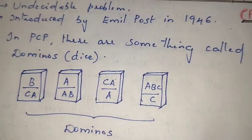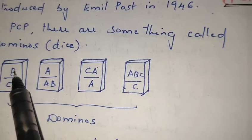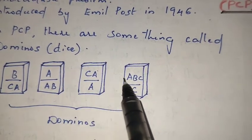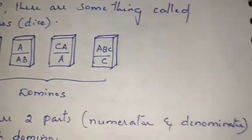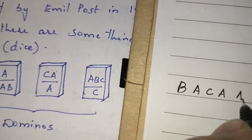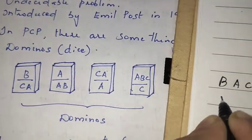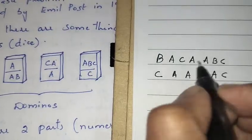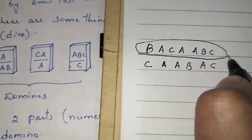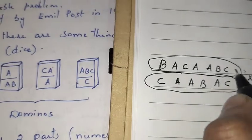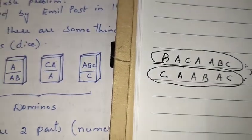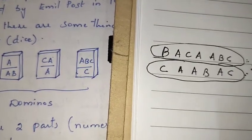We need to arrange the dominoes such that the top part and the bottom part produce the same string. If I combine the top part I get 'bacaabc', and the bottom part gives 'caabac'. These strings are not equal, so I need to create arrangements where the top string equals the bottom string.